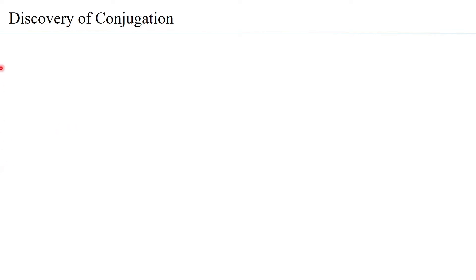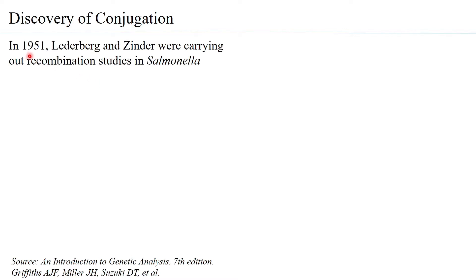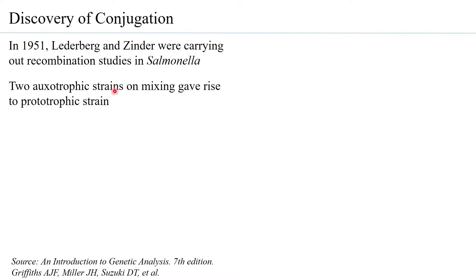The discovery of conjugation led to the discovery of transduction. In 1946, Lederberg and Tatum discovered conjugation, and when they continued to work in 1951, Lederberg and Zinder were carrying out recombination studies using Salmonella. They mixed two auxotrophic mutants of Salmonella, and these two auxotrophic strains when mixed gave rise to a prototrophic strain — very similar to what was observed when conjugation was discovered.